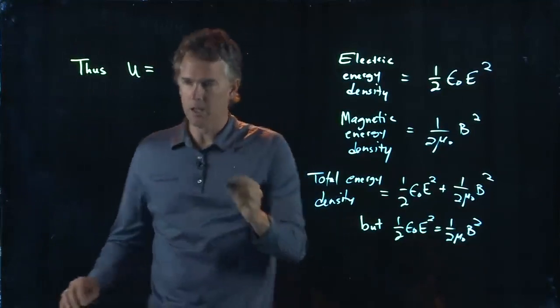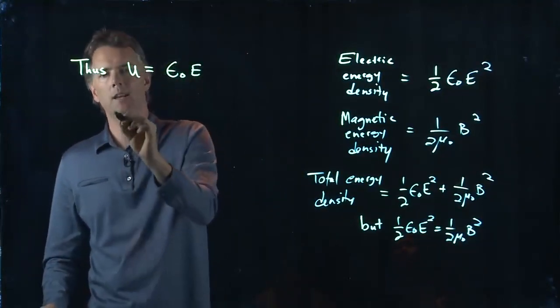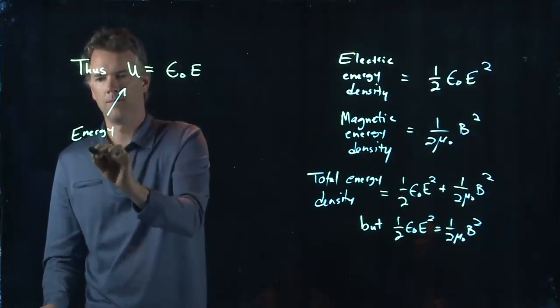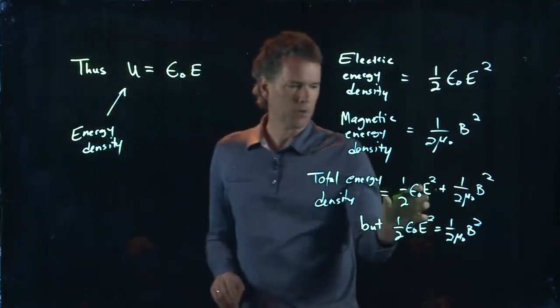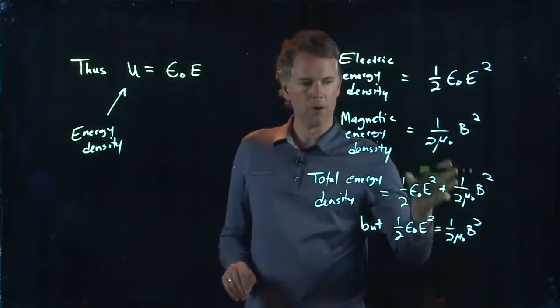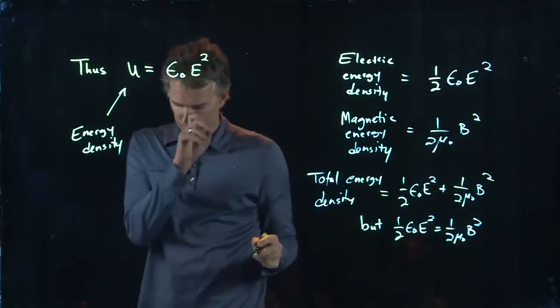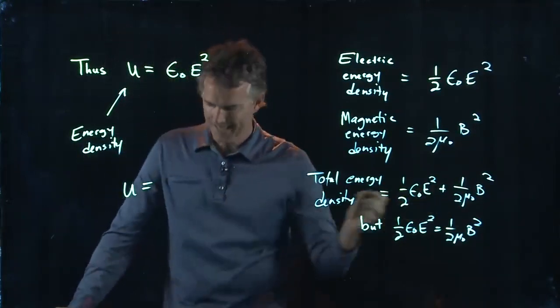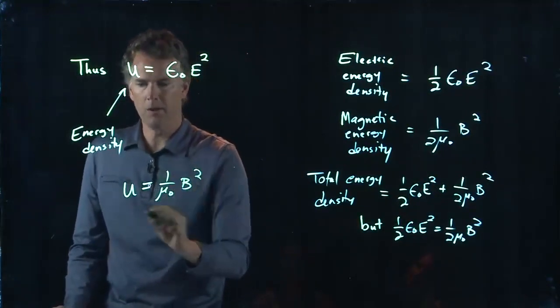U is what we're calling the energy density. And we can write it in terms of E. And if the electric part is equal to the magnetic part, we can just write it as twice the electric part: epsilon knot E squared. Or we can write it in terms of the magnetic part: one over mu knot B squared.